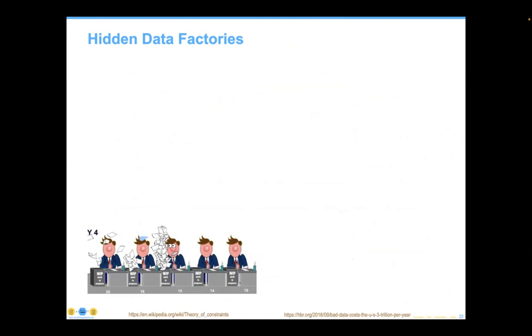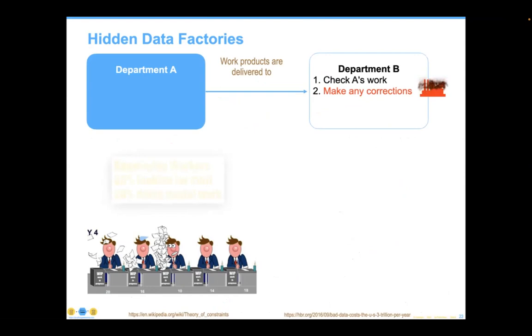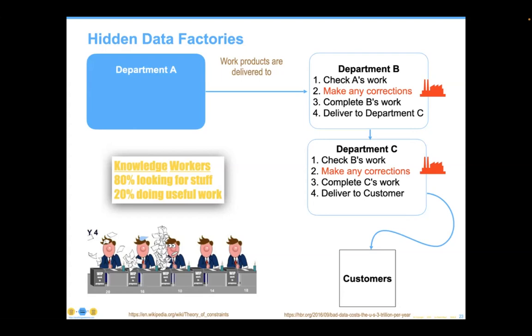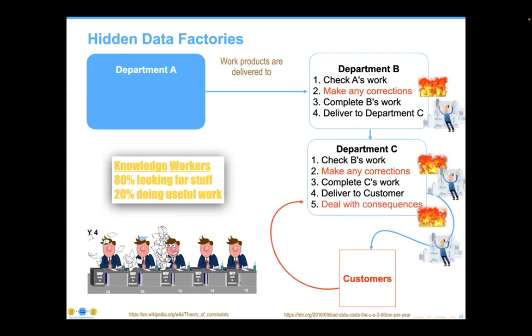One of the most egregious issues is what Tom Redman detailed in a wonderful Harvard Business article about hidden data factories. The idea is that Department B, rather than fixing Department A, actually just says 'we'll just suck it up and do the work.' That's what counts as a hidden data factory. Similarly, Department C has one in its work process — 'we always have to fix the widgets from B because they never get them right.' His cost on this was $3 trillion a year on the US economy. These hidden data factories are pernicious, and we need to find and get them where we can.